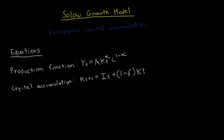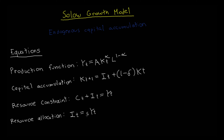Up next is the capital accumulation equation — one of the key equations of the model. It basically states that capital tomorrow (T+1) is equal to how much we invest today (I) plus the amount of capital that doesn't depreciate today. Let delta be the depreciation rate, so one minus delta is the fraction of capital that doesn't depreciate. After that, we have a basic resource constraint: consumption plus investment equals output. And last, we have a resource allocation equation — investment is just some constant fraction S of output.